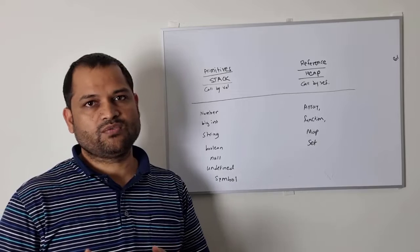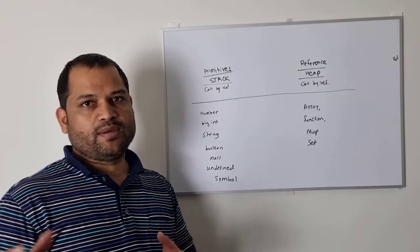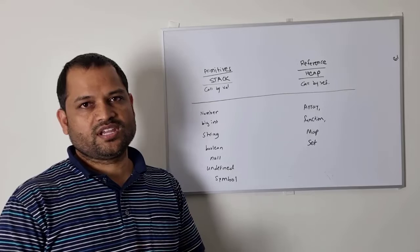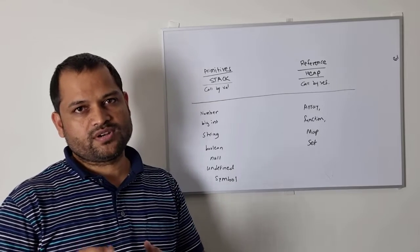For example, if you say let a equals 10, a will get the type of number. If you put a string into that, it will get the type of string, and so on.